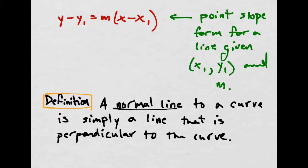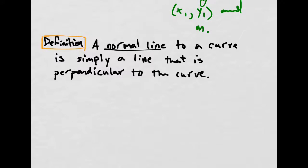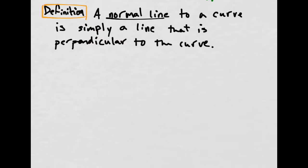So, tangent lines, they just barely touch it and they pass through at one point. Normal lines are just perpendicular. So let's draw a picture real quick just to emphasize what these means.